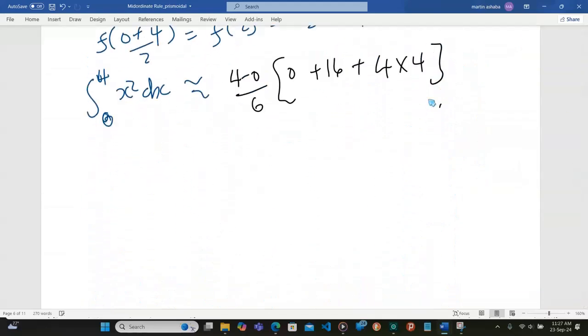This is going to be 2 out of 3 into 16 plus 16, that is 32, and that equals 64 out of 3.